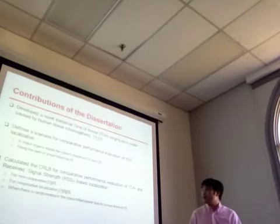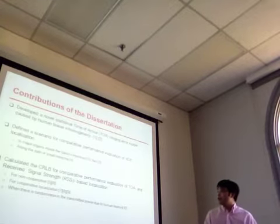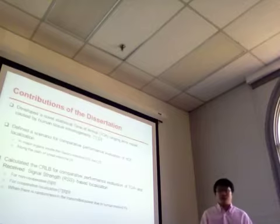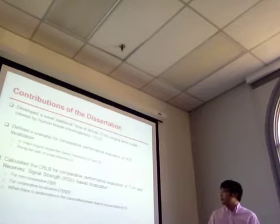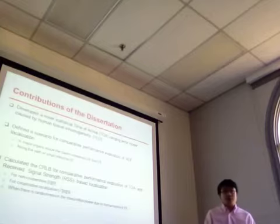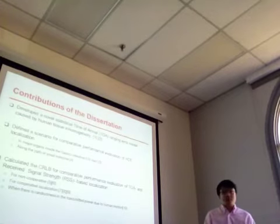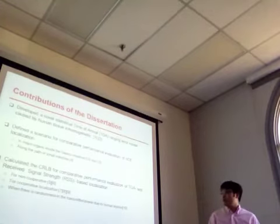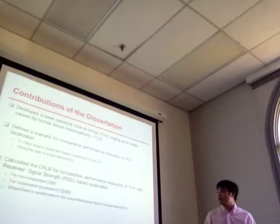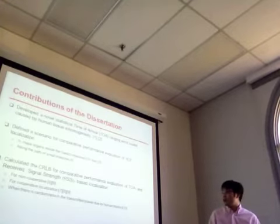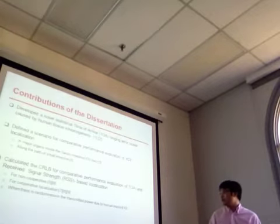The third contribution involved calculating the Cramér-Rao lower bound for both TOA and RSS-based localization. We first calculated the bound for a single capsule localization problem, then extended the work to multiple-capsule cooperative localization, and finally analyzed the effect of randomness in the transmitted power on location accuracy.